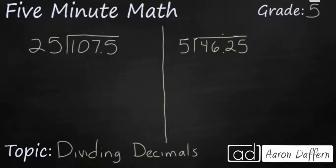On this first problem, we're going to make sure our decimal gets moved up to the division bar. 25 is going to go into 107 four times because 4 times 25 is 100. And that is going to leave us 7 and then a 5. So, 75. And 25 goes into 75 three times. So, your answer is 4.3.